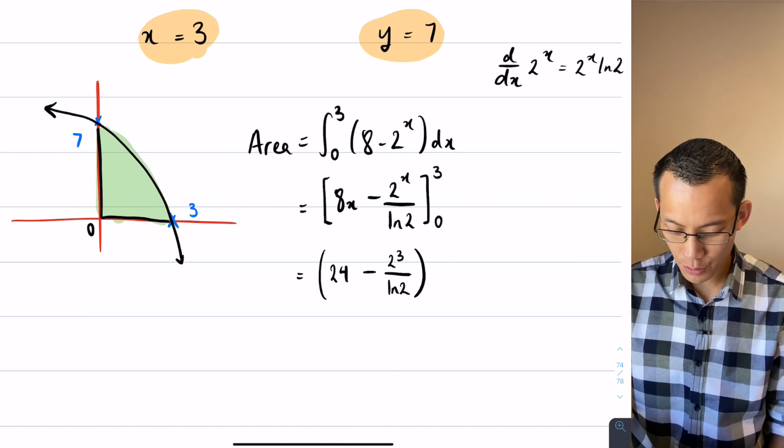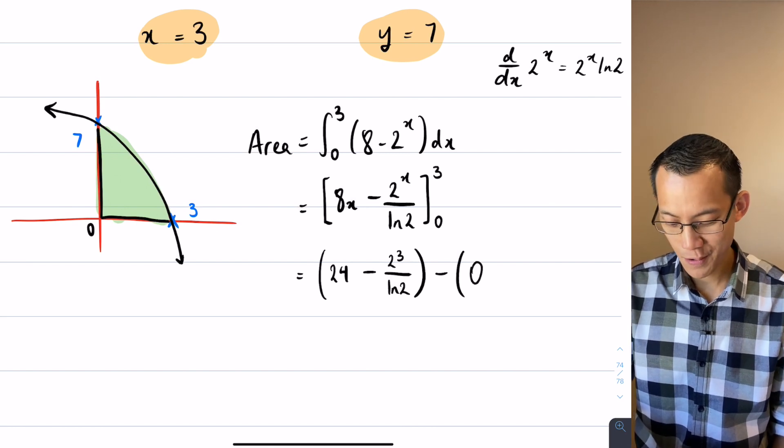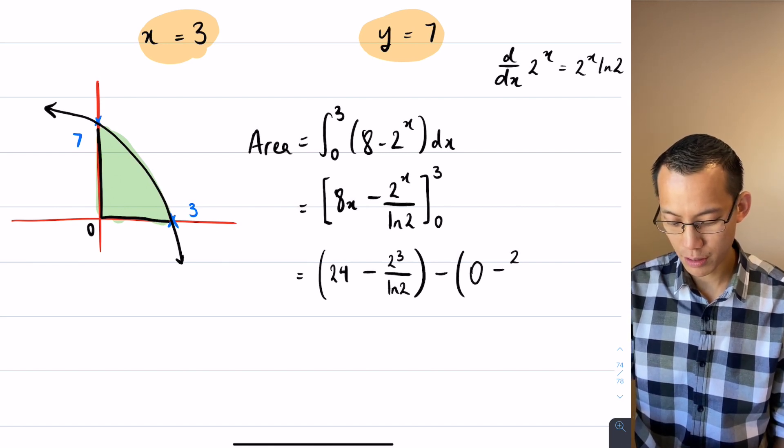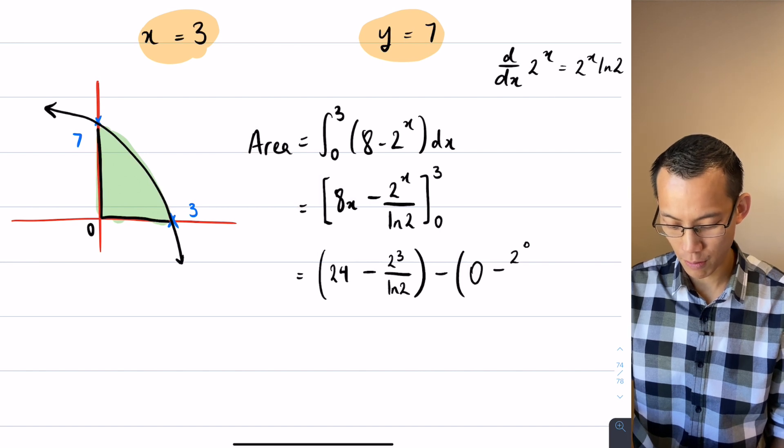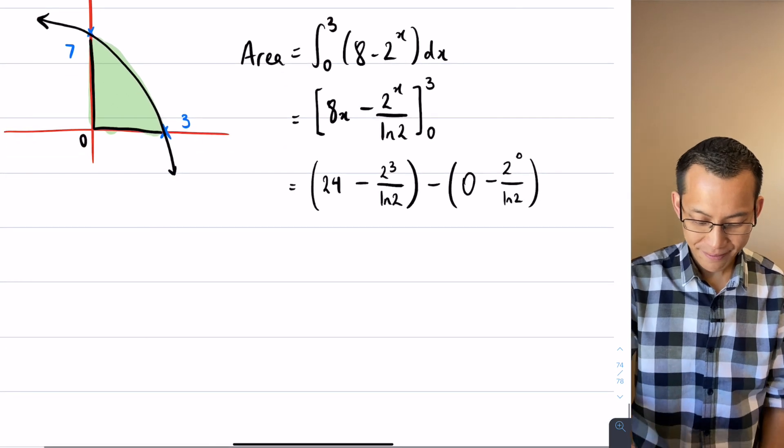Then I'm going to subtract the bottom boundary. So let's see here. 8 lots of 0 is 0 and then I've got 2 to the power of 0 all over log 2 like I had before.